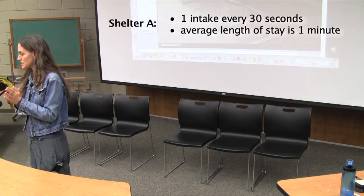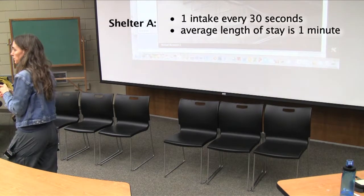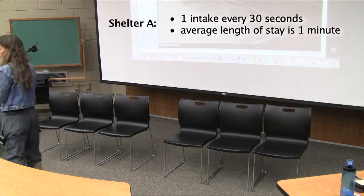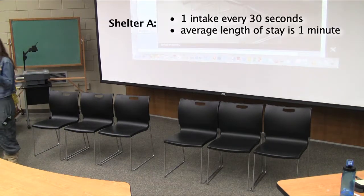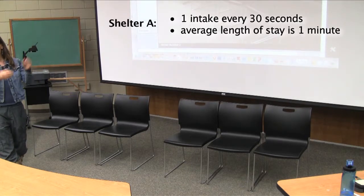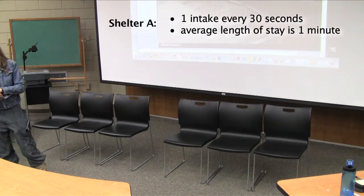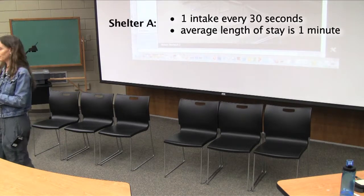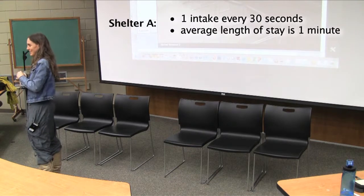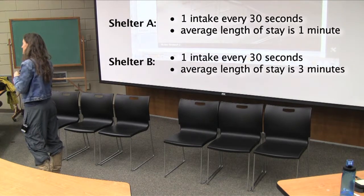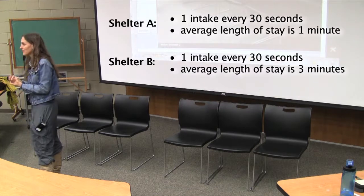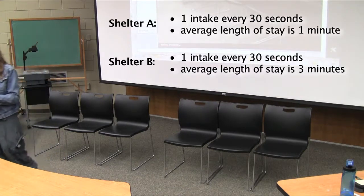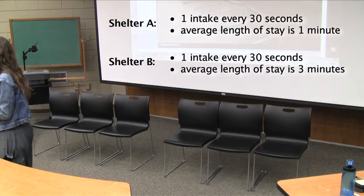Shelter A has an average length of stay of one minute. So once you come into Shelter A, you have to stay for a minute. After you stay for a minute, you get to go home. This game is all live release. In Shelter B, one intake every 30 seconds, but in Shelter B, everybody stays for three minutes.